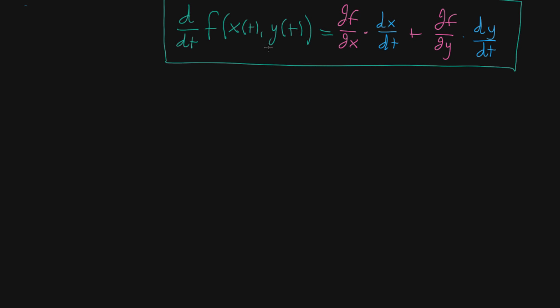So in the last video, I introduced this multivariable chain rule. And here I want to explain a loose intuition for why it's true, why you would expect something like this to happen. So the way you think about an expression like this, you have this multivariable function, f of x, y, and you're plugging things in.